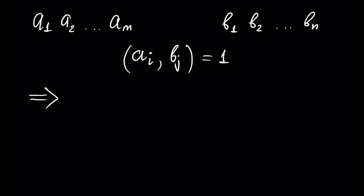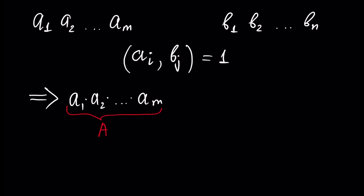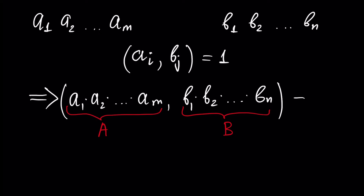In this case, the multiplication of the AI's — A1 times A2 times and so on AN, denoted as big A — is relatively prime with the multiplication of the numbers of the second set: B1 times B2 times and so on BN, denoted as big B. So A and B are relatively prime.